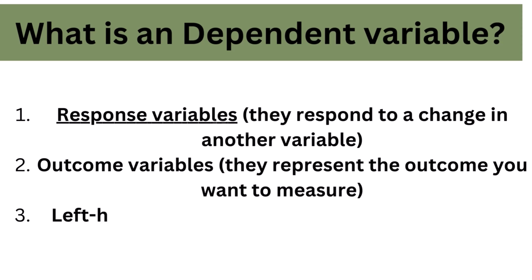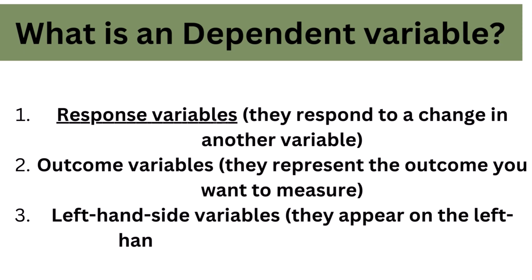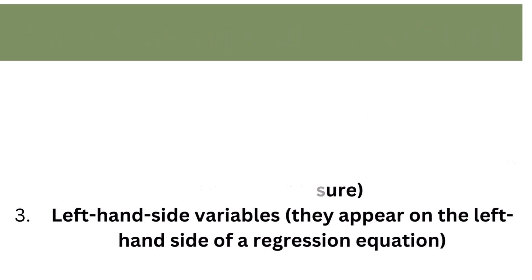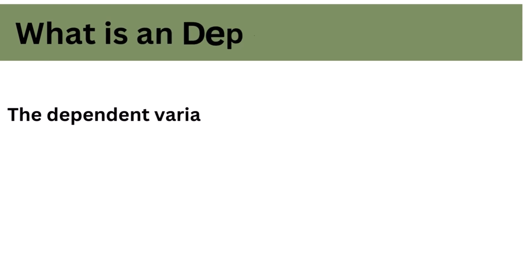Outcome variables represent the outcome you want to measure. Left-hand side variables appear on the left-hand side of a regression equation.